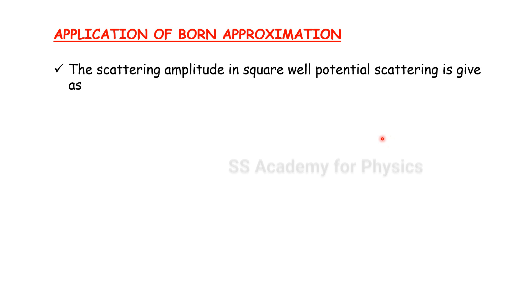In different physical contexts, the Born approximation is used. For neutron scattering, the first-order Born approximation is almost always adequate — except for neutron optics, internal total reflection in a neutron guide, and grazing incidence small-angle scattering. For those cases, the Born approximation is not adequate.